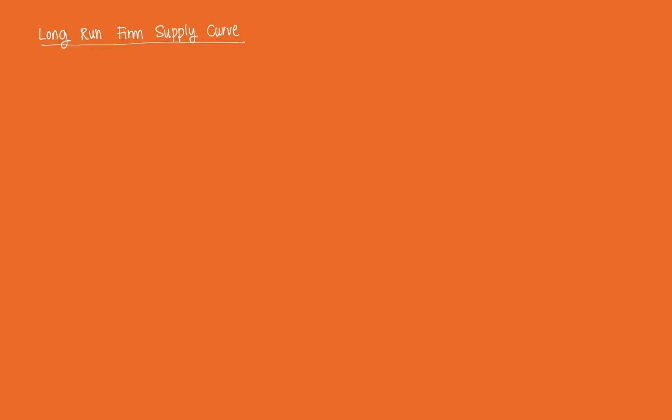As such, all costs are variable — we only have a long-run cost. And the way that we derive a firm's long-run supply curve is very similar to how we derive the short-run, except that we need to relax some of the assumptions. The long-run supply curve of a firm is obtained from a long-run profit maximization FOC, assuming the SOC (second-order condition) is satisfied when all inputs are variable.